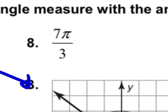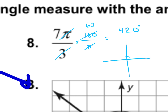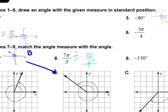For number 8, we have 7π over 3. Let's convert to degrees by multiplying by 180 over π. The π's cancel, and 3 goes into 180 sixty times, leaving 7 times 60 equals 420 degrees. Since 420 is more than 360, subtract 360 to get 60 degrees more. That's in the first quadrant, so it matches answer A.